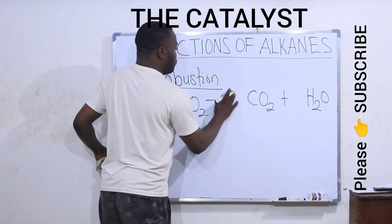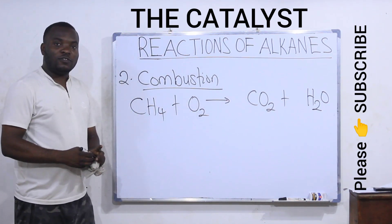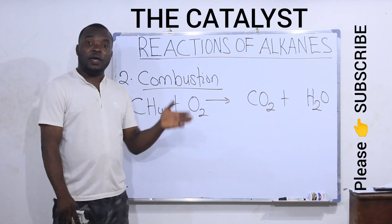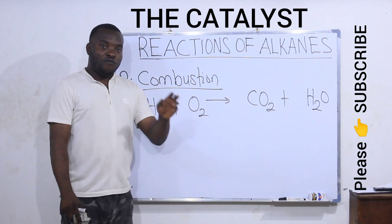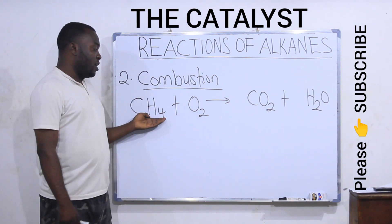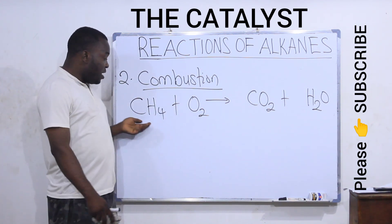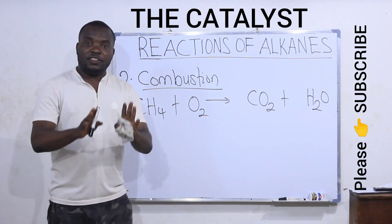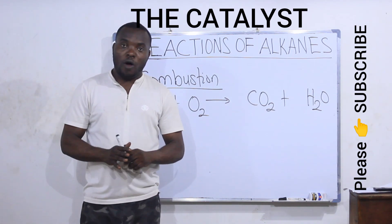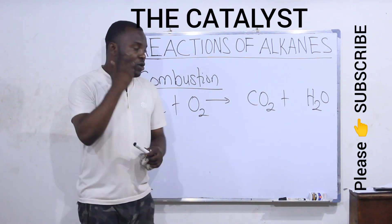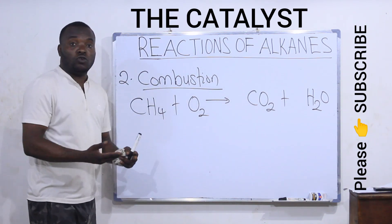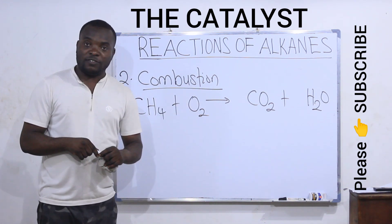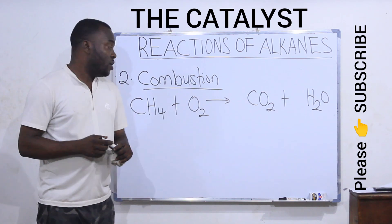Under exam conditions, what the examiner would like to know is if you can write a balanced equation for the combustion of an alkane. Here we are using methane. You can use the inspection method, which is looking at the equation and putting the necessary numbers where necessary.